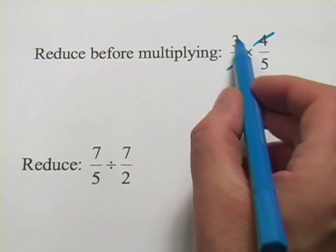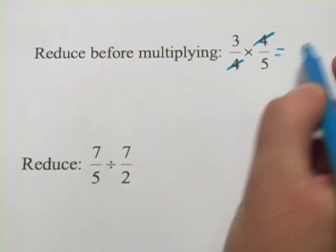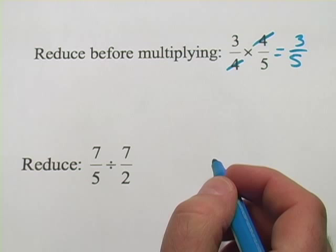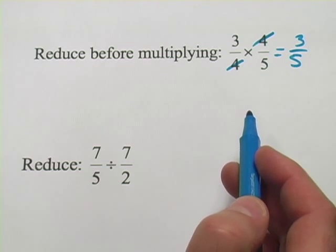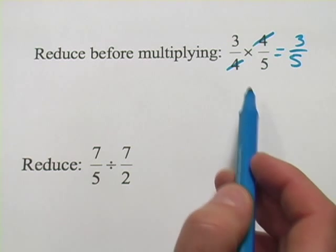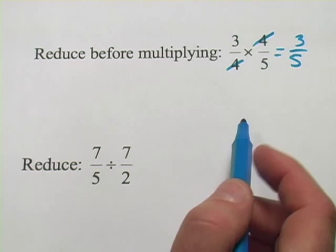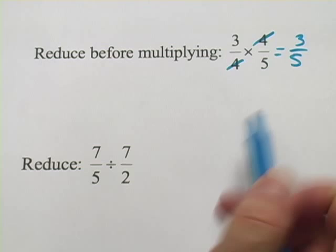Now what you're left with is a 3 on top and a 5 on the bottom, and we just write that as 3 fifths. So we didn't really have to do any multiplying in that one at all to get the right answer. All we had to do was cancel. So that's the advantage of reducing before multiplying. Let's try a couple others.